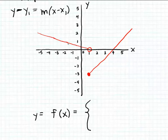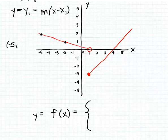Let's locate a couple of points on the graph of this line on the left. One point appears to be the point with coordinates (−2, 1), and a second point on the graph of this line is the point with coordinates (−5, 2). So we have the two points (−5, 2) and (−2, 1). We can use those two points to compute the slope, and then use one of those points in the point-slope formula. Let's start by calculating the slope.